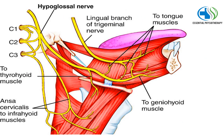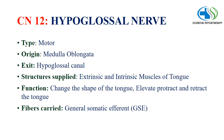The 12th and final cranial nerve is the hypoglossal nerve. It is a pure motor nerve with its origin from the medulla oblongata, exiting through the hypoglossal canal. The structures supplied are the extrinsic and intrinsic muscles of the tongue. Its function is to change the shape of the tongue, and to elevate, protract and retract the tongue. Fibers carried are general somatic efferent fibers.